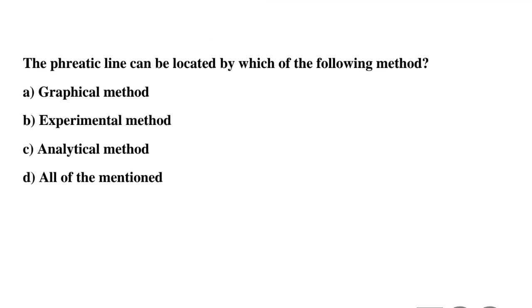Question 12: The phreatic line can be located by which of the following methods? Option A: graphical method, Option B: experimental method, Option C: analytical method, Option D: all of the above. The correct answer is Option D: all of the above.